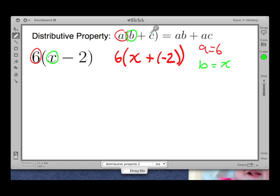But now our c is going to be a little different. We have plus c. Over here we have minus 2, but we rewrote that as plus negative 2. So c is actually going to be negative 2. All right, so now let's write our equation. We have to do a times b. So 6 times x plus a times c, which is 6 times negative 2.